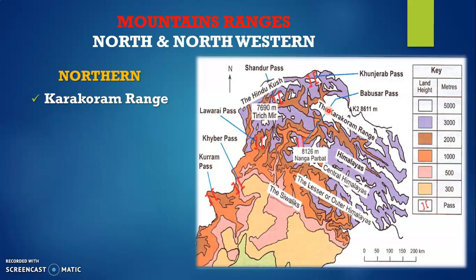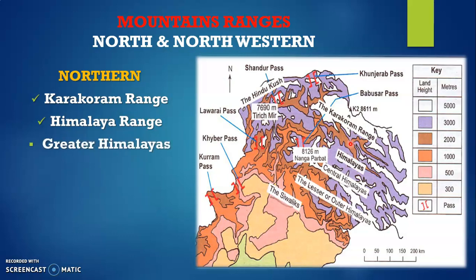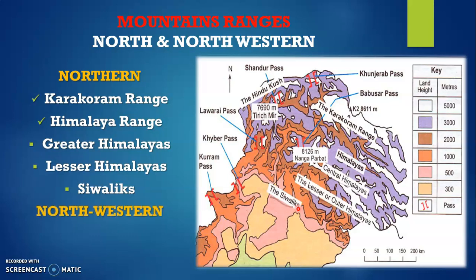Number two we have the Himalaya Range. The complete Himalayas basically stretch until northern India as well, and there are certain subtypes: for example the Greater Himalayas, then the Lesser Himalayas or the Outer Himalayas, and lastly the Siwaliks. Please watch the pointer carefully because I'm going to show these locations on the map, and this is how you have to identify these locations as well. Then if we talk about the northwestern areas, the mountain range we have there is Hindukush — so this is the location of Hindukush. These are the mountain ranges of north and northwestern Pakistan.